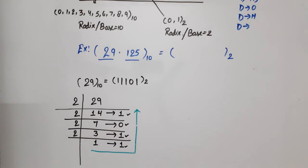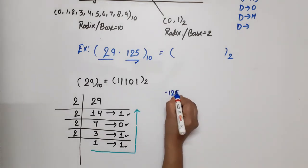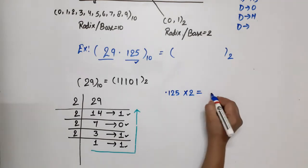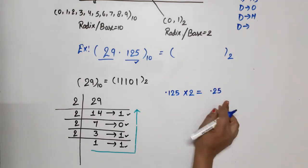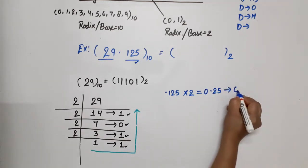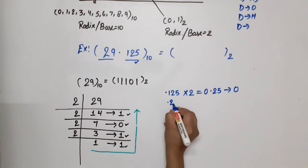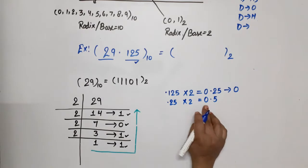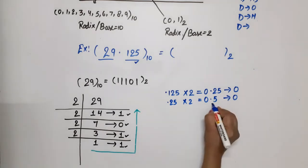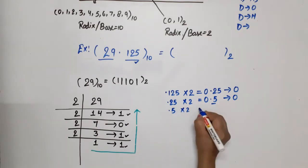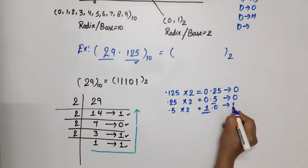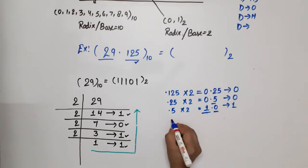Now the other part is our fraction. For the fraction part we use multiplication. Suppose 0.125 is given — we multiply by 2. 0.125 × 2 = 0.25, integer part is 0. 0.25 × 2 = 0.5, integer part is 0. 0.5 × 2 = 1.0, integer part is 1.